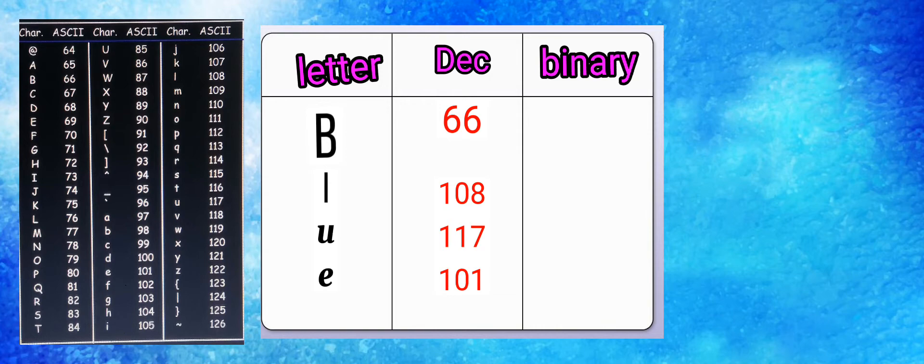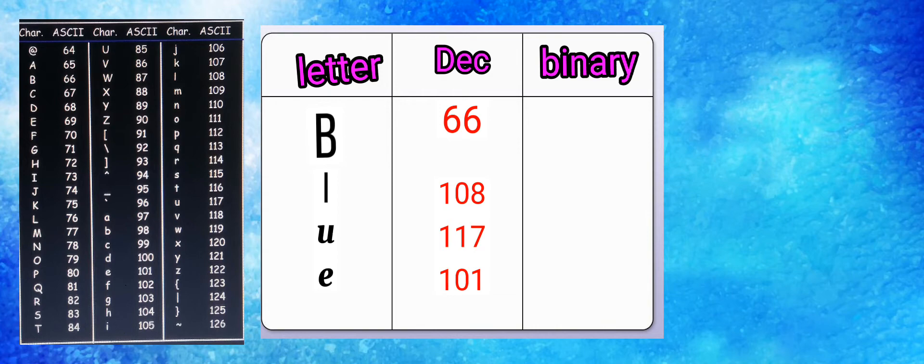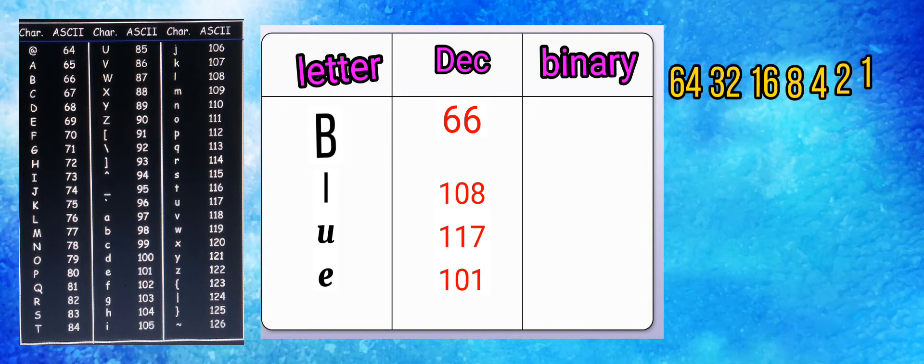Next, we need to convert these decimal values into binary values. The ASCII code is a 7-bit binary system, so 2 raised to the power of N minus 1, or 2 raised to the power of 7 minus 1, which equals 2 to the 6, which is 64. 64 is going to be the highest placement for the binary number, so it's going to be 64, 32, 16, 8, 4, 2, and then 1.